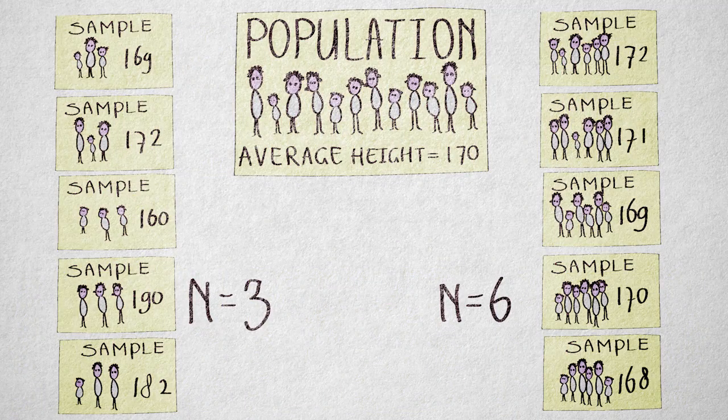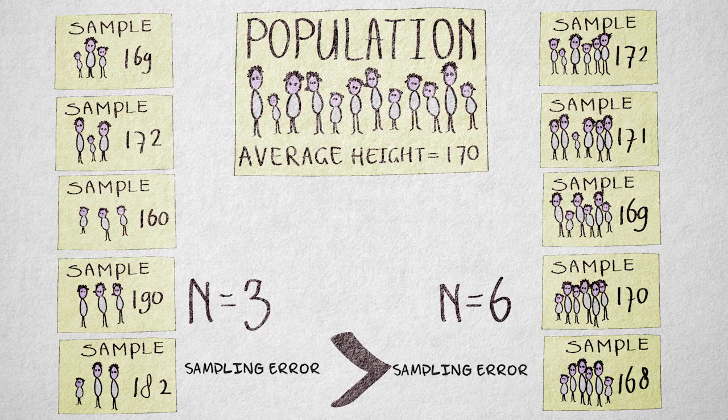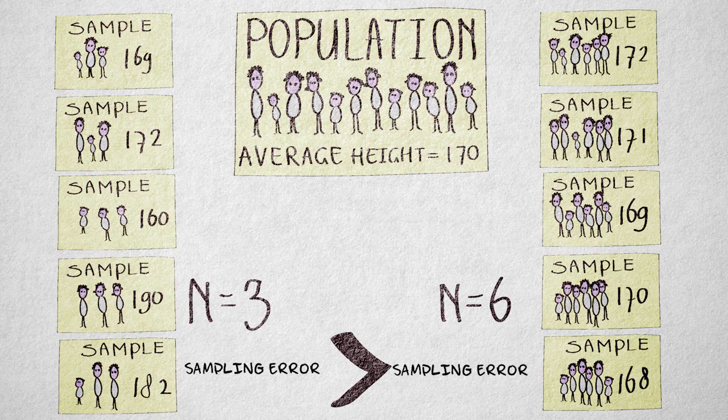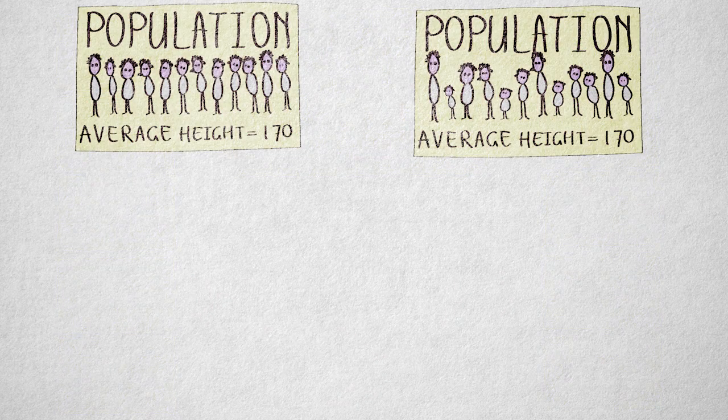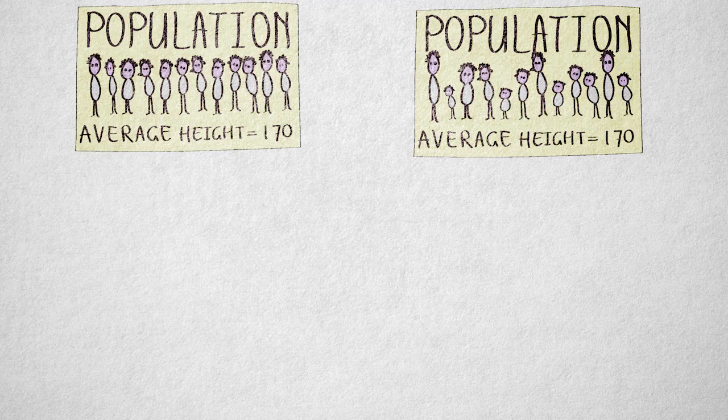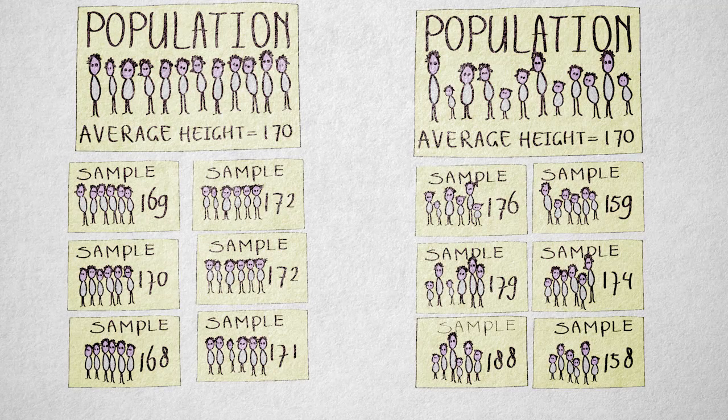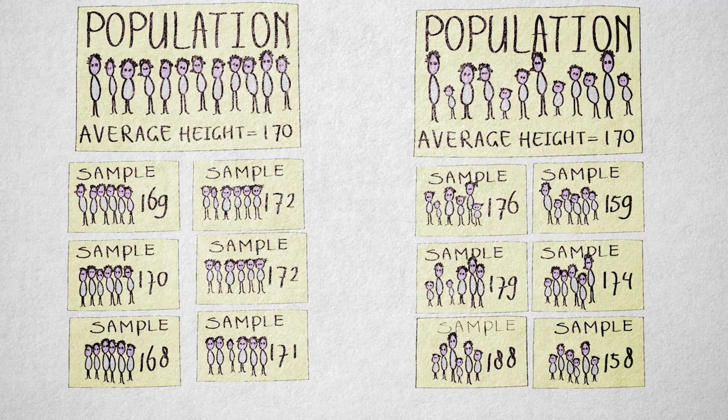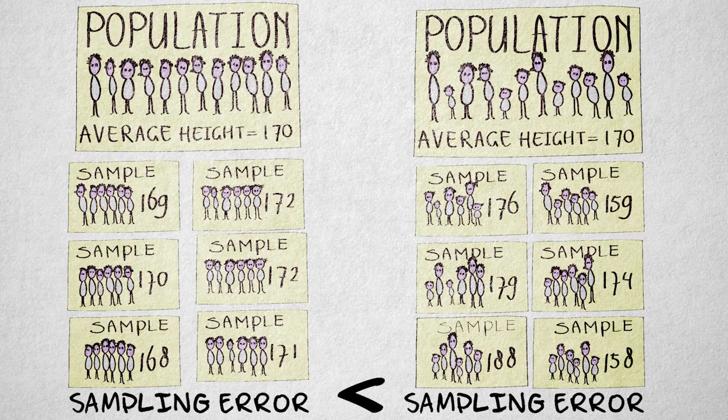Sampling error is related to the sample size. As sample size increases, sampling error will become smaller. Sampling error is also influenced by the amount of variation in the population. If a population varies widely on the property of interest, then the sample value can also assume very different values. For a given sample size, sampling error will be larger in a population that shows more variation.